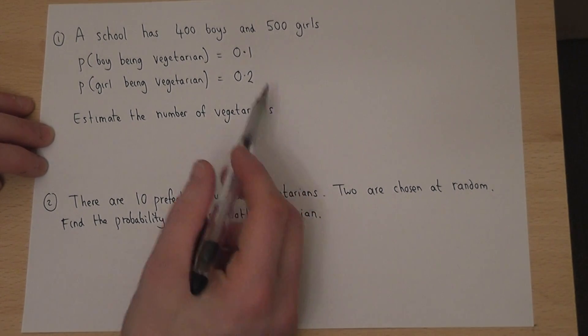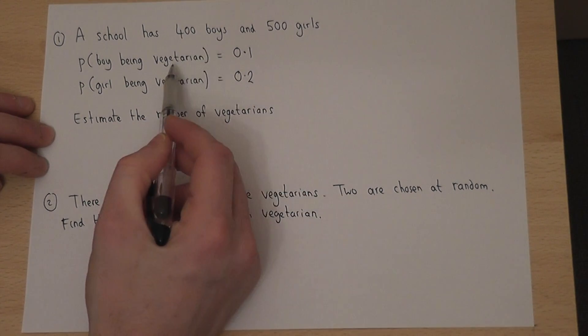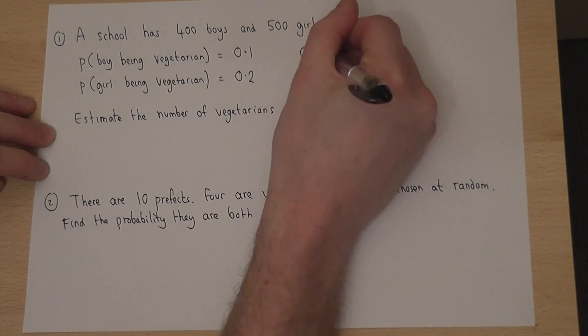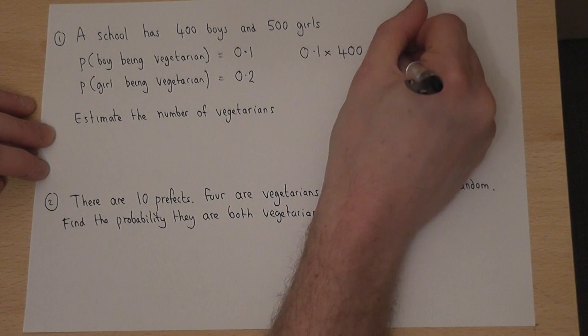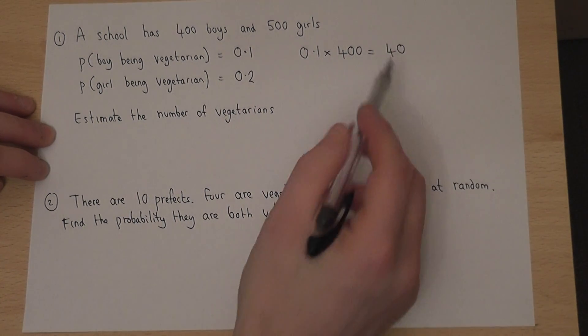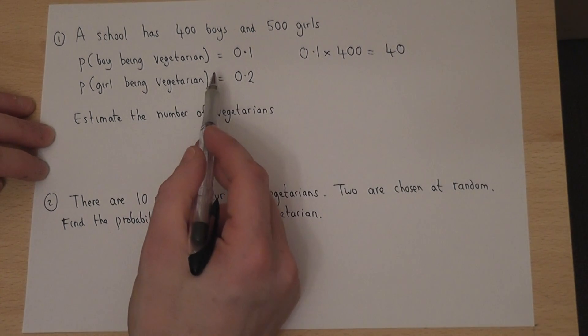So the number of boys we'd expect to be vegetarian will be 0.1 lots of 400, which is 40. So we'd expect 40 boys to be vegetarian.